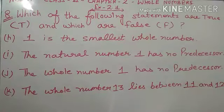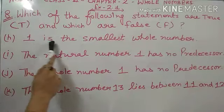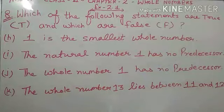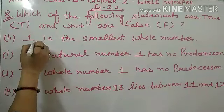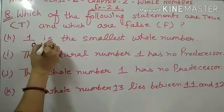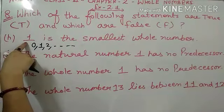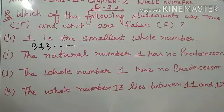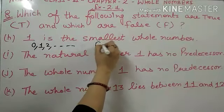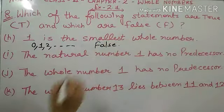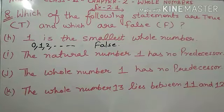Now h part: 'One is the smallest whole number.' Bachoh, one smallest whole number hai — yeh statement true hai ya nahi? Ab whole number start hoota hai zero se. So smallest whole number kya huwa? Zero. But yahaan pe kya bataya huwa hai? Smallest whole number diya huwa hai one. Toh yeh statement false hai. Kyunki smallest whole number hoota hai zero.